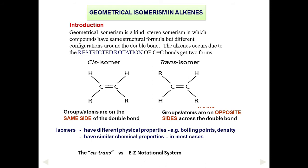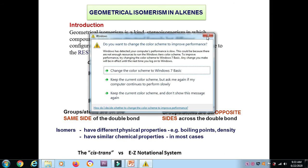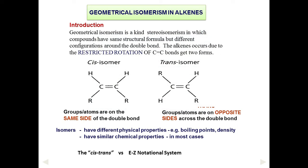What is geometrical isomerism? Geometrical isomerism is a kind of stereoisomerism in which compounds have the same molecular formula but different configuration around the carbon-carbon double bond — occurring due to restricted rotation of the C=C bond. Groups or atoms on the same side of the double bond give cis isomerism; those on opposite sides give trans isomerism. These isomers have different physical properties such as boiling point and density, but similar chemical properties in most cases.